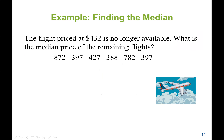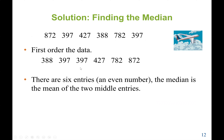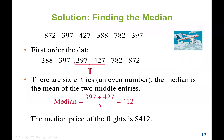In this next example, we have six flight prices — an even number. To find the median, we first put the data in order, then take the two middle values and find the average. The two middle values are 397 and 427, so 397 plus 427 divided by 2 gives us a median of $412.